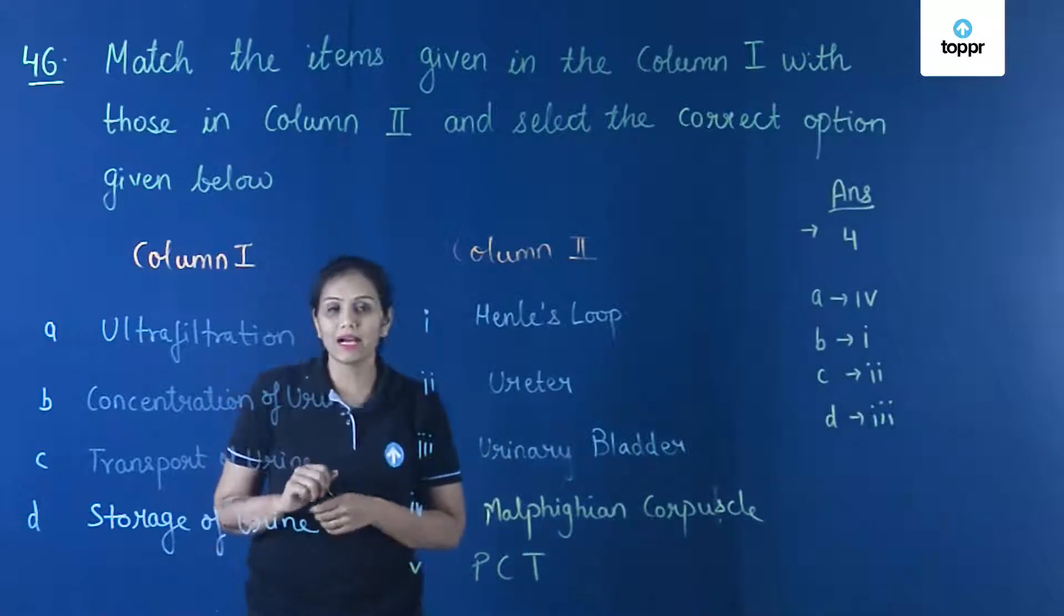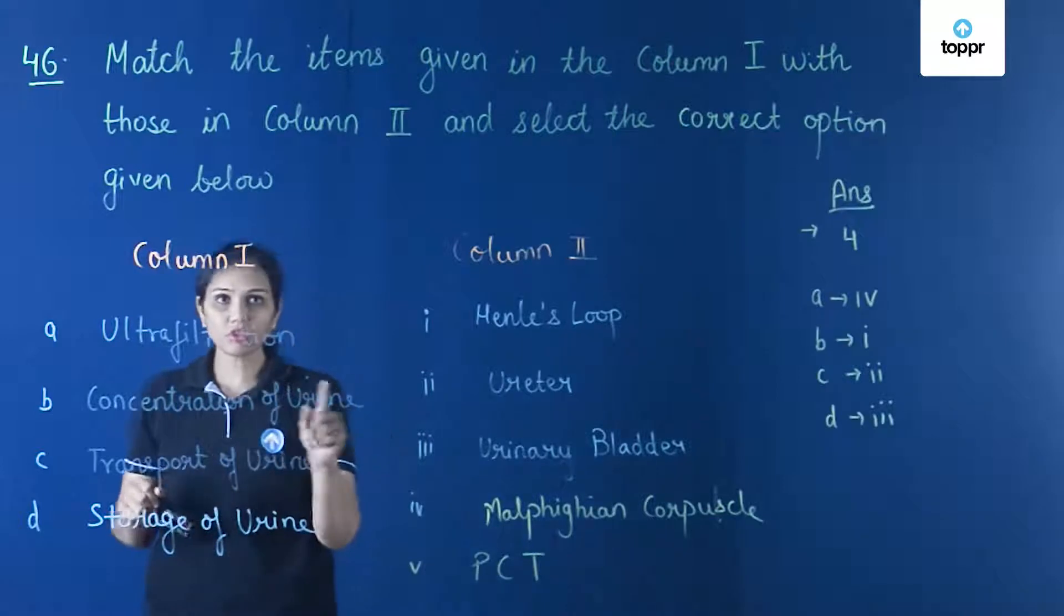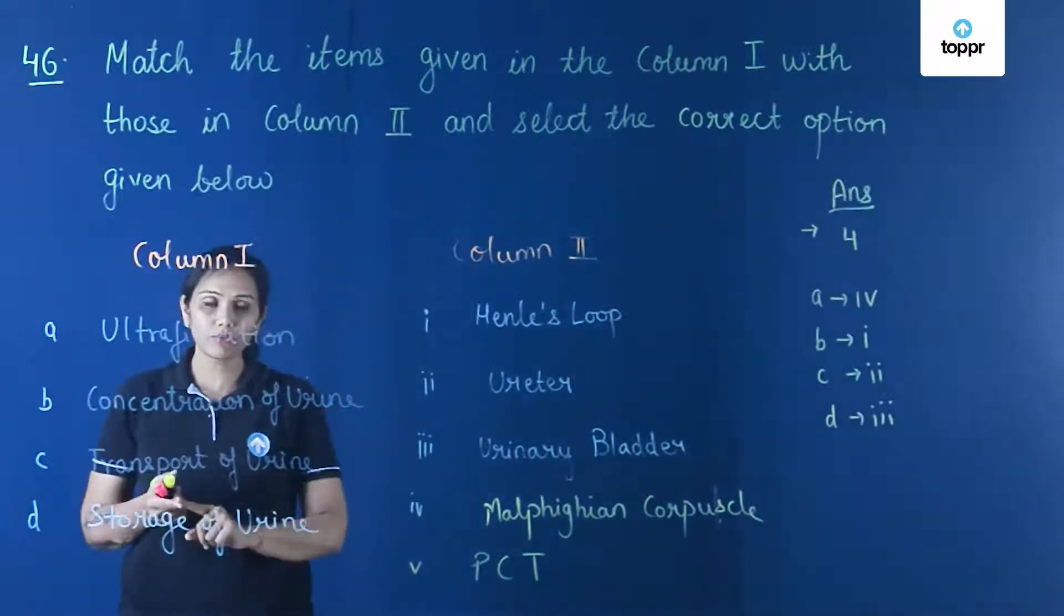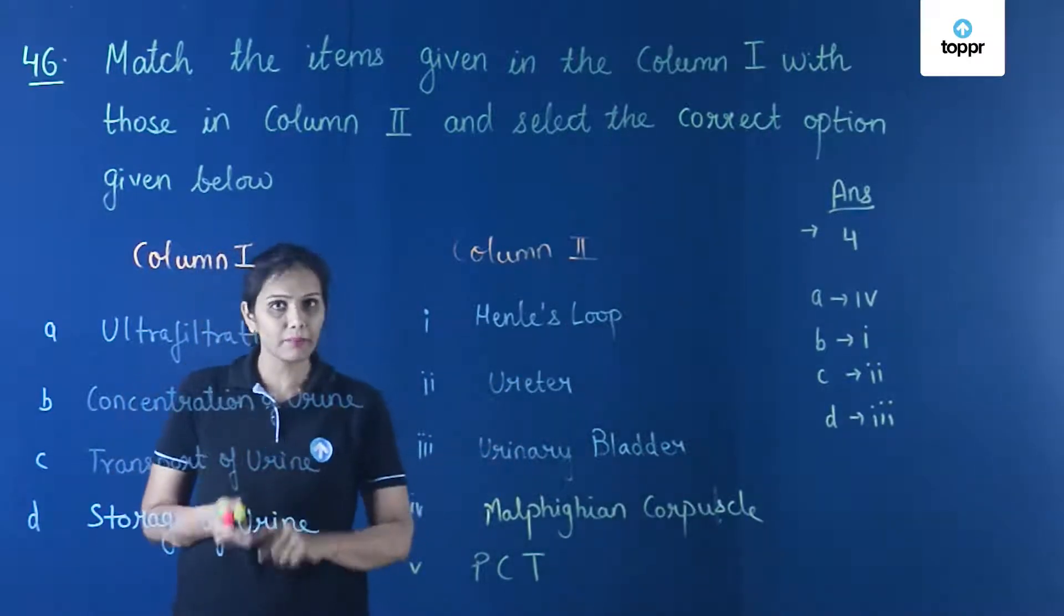The first option is ultrafiltration, which is related to Malpighian corpus. Concentration of urine is related to Henle's loop, transport of urine is related to ureter, and storage of urine is related to urinary bladder.